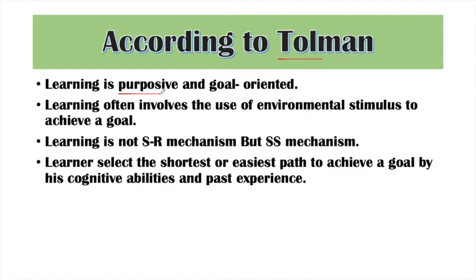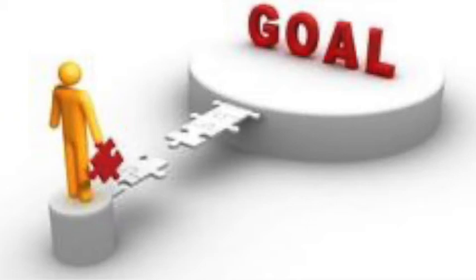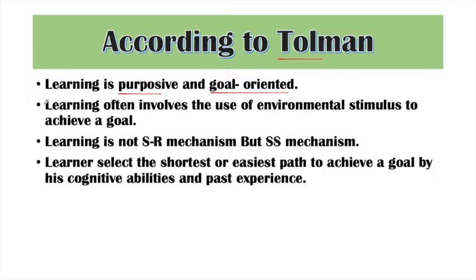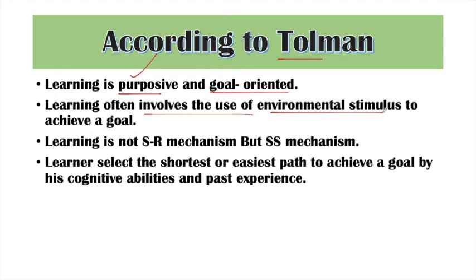According to Tolman, learning is purposive and goal-oriented. We do not learn anything randomly — we always have a goal and a target that we need to achieve. In this process, learning takes place. Tolman says that the environment gives us signals; we get many stimuli from our environment which help us reach our goal.